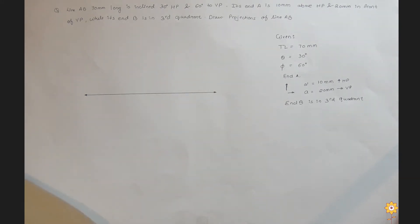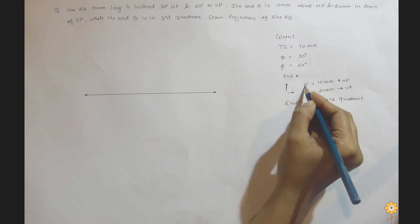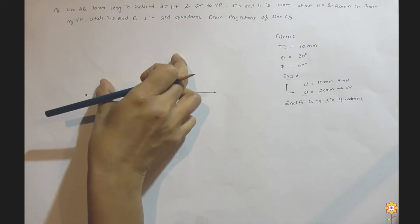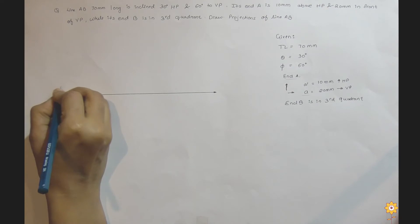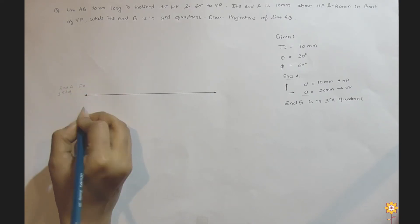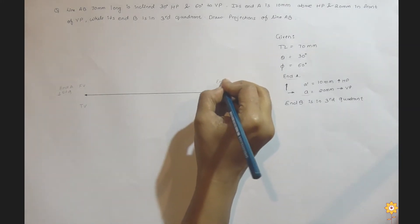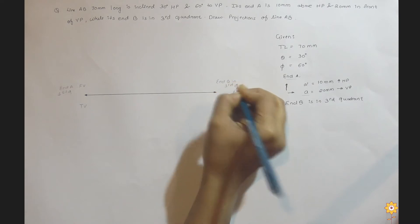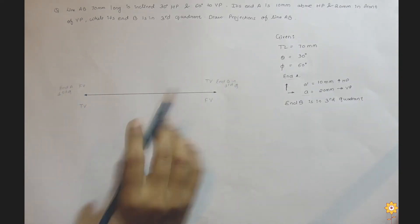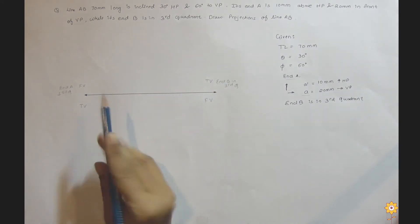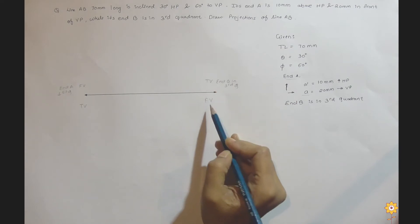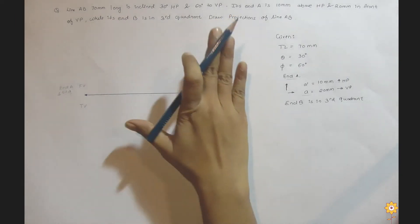For end A in the first quadrant, the front view will be above xy and the top view will be below xy. For end B in the third quadrant, the top view will be above xy and the front view will be below xy. This explanation is just for clarification — it is not what we write while solving the question. So for point A, front view is above xy and top view is below xy; for point B, top view is above xy and front view is below xy, because point A is in the first quadrant and point B is in the third quadrant.